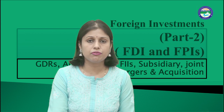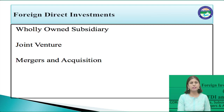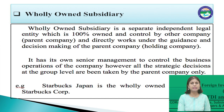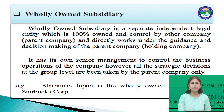So that covers foreign portfolio investments. Another type of investment is foreign direct investment. FDI is very much concerned with the operation and ownership of the host country firm. These include wholly owned subsidiaries, joint ventures, and acquisitions. A wholly owned subsidiary is a separate independent legal entity that is 100% owned and controlled by another company called the parent company, and directly operates under the guidance and decision-making of the parent company. It has its own senior management to control business operations; however, all strategic decisions at the group level are taken by the parent company only.